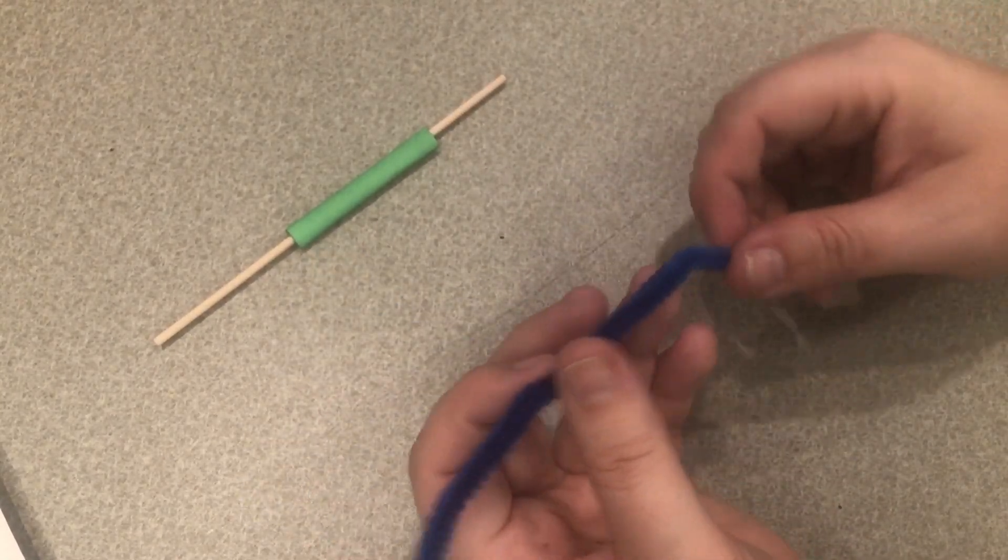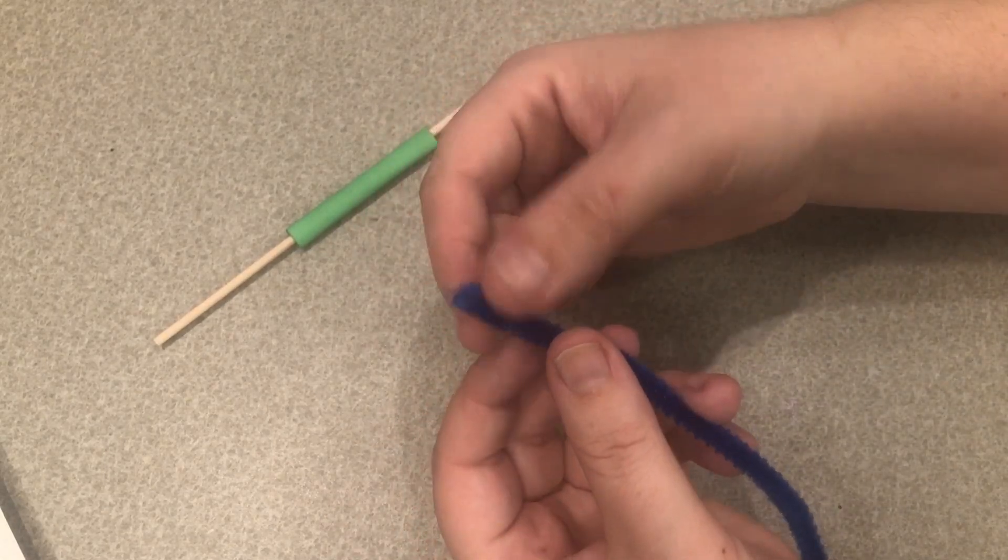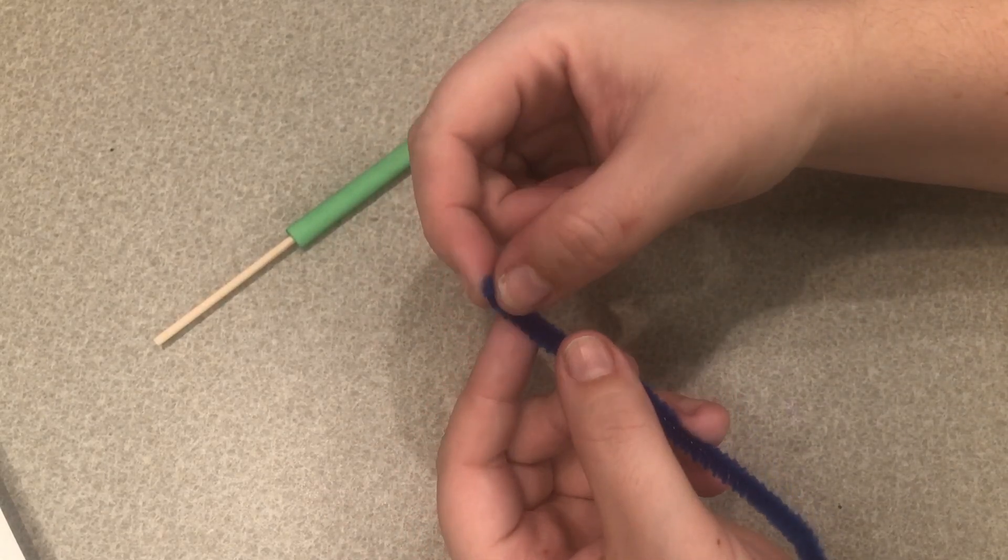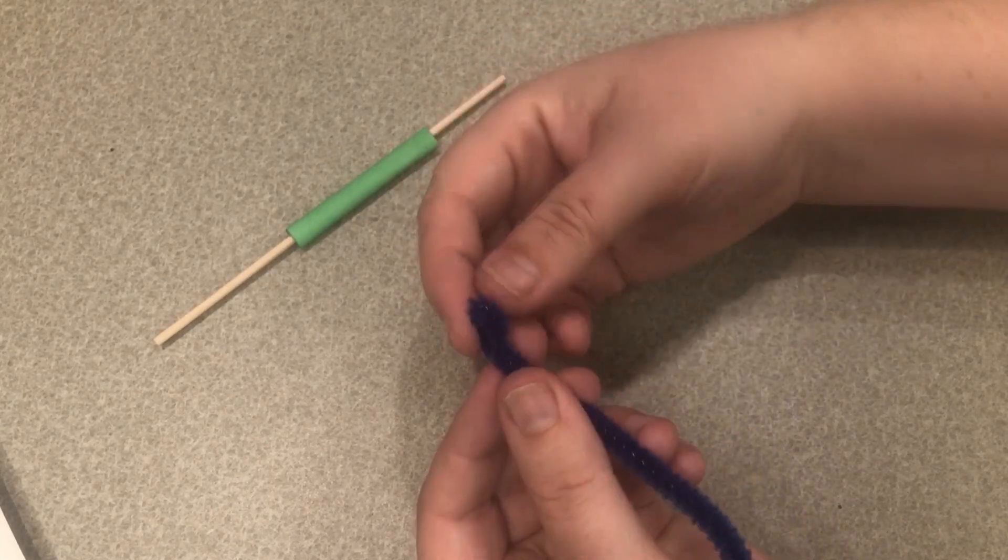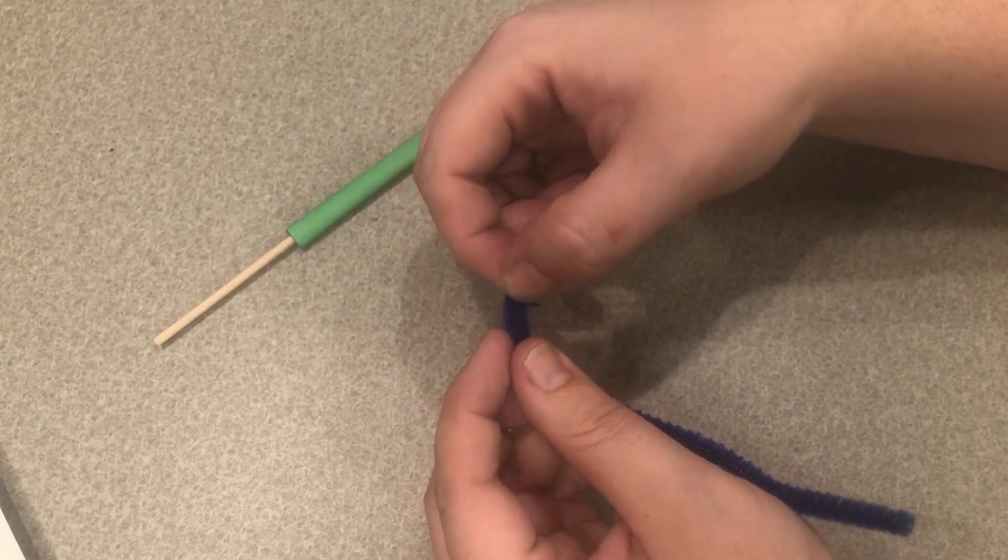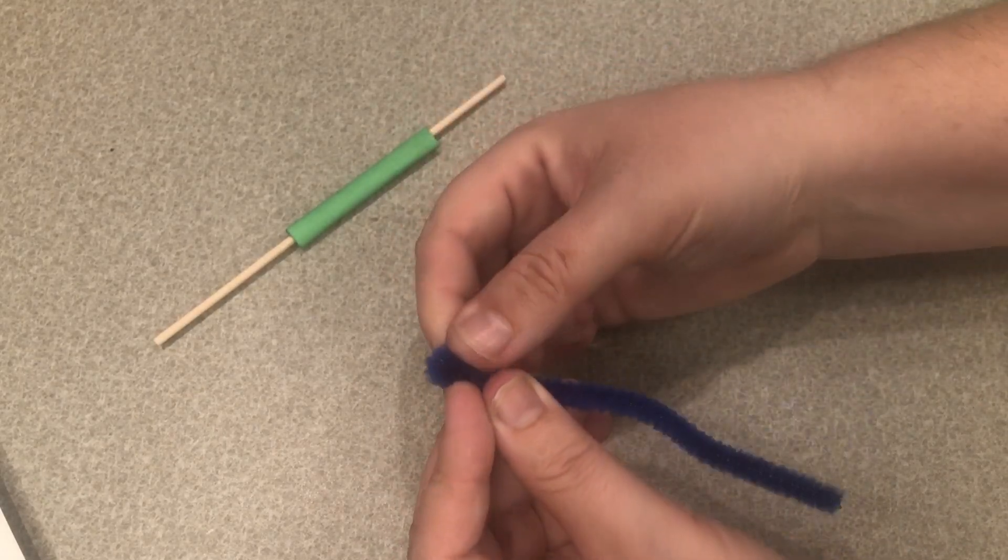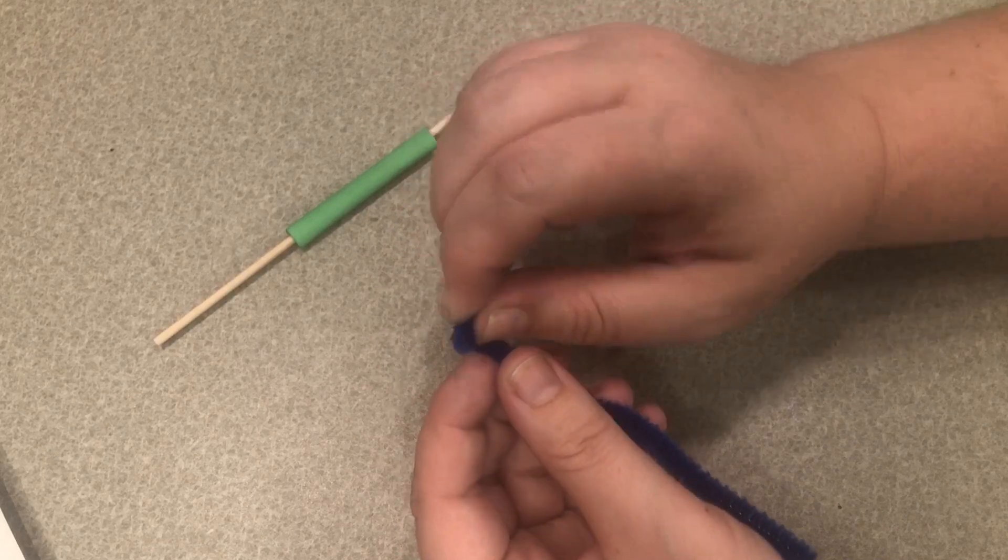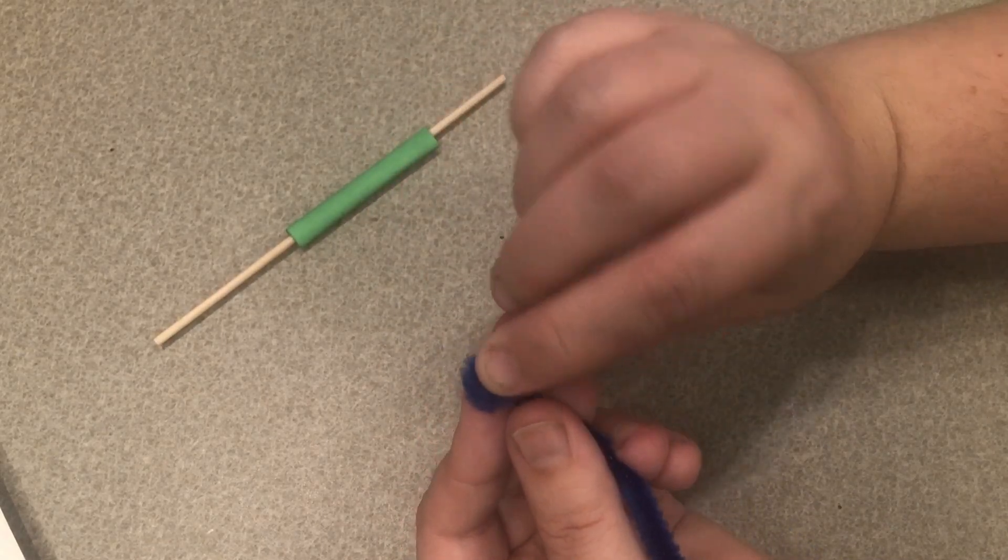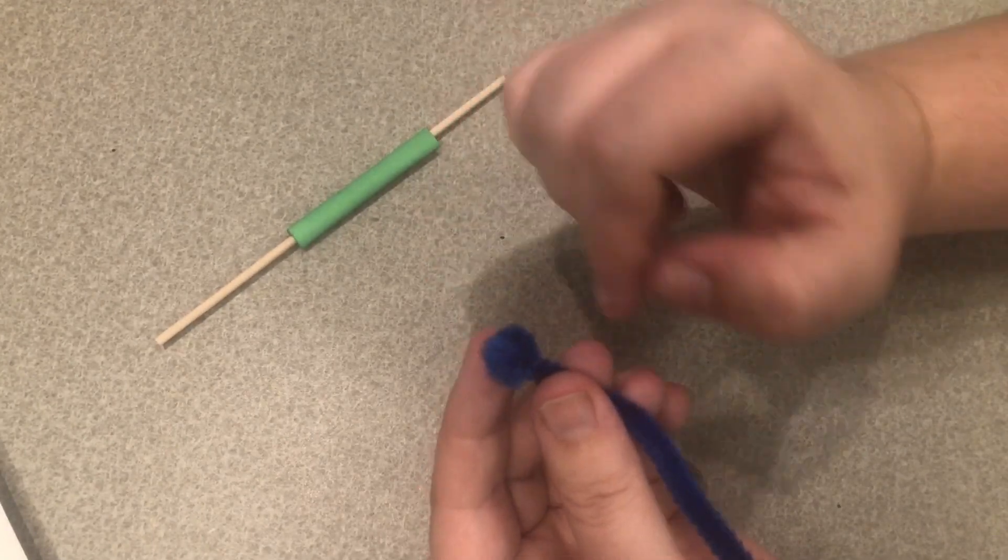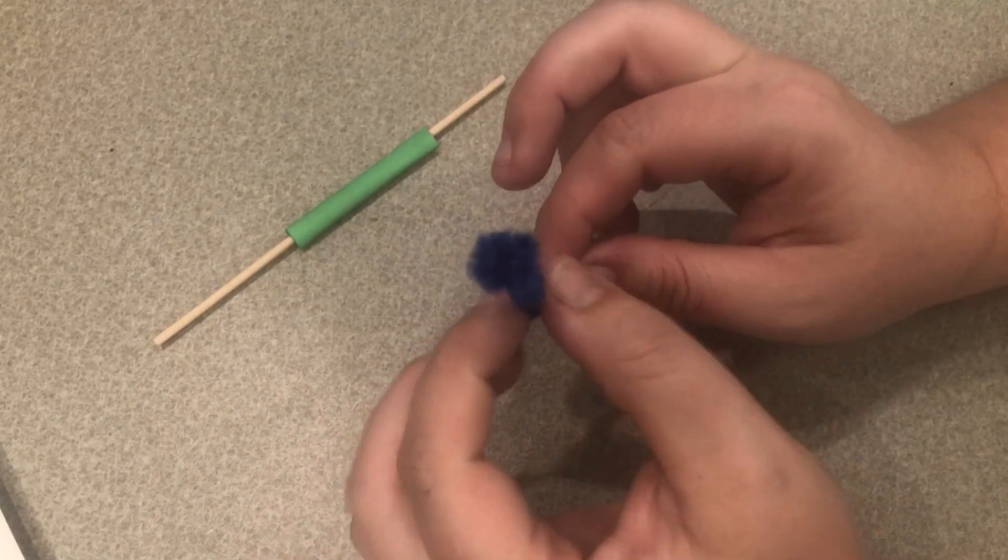We are going to take our little worm and we're going to grab one end and just fold it back into a very small circle and then we're going to roll it back a couple of times and then turn it sideways and roll it back one more time. So it kind of stands up there and you have a little circle at one end.